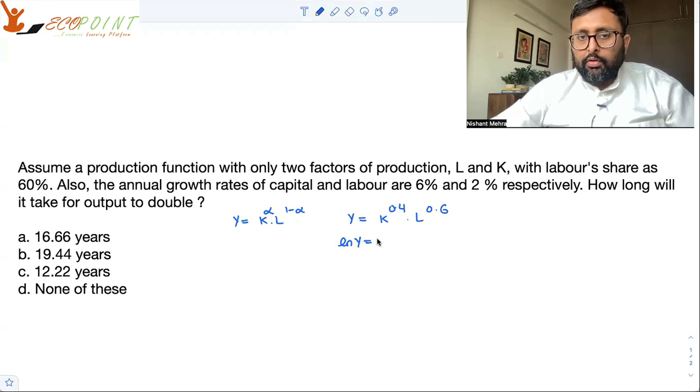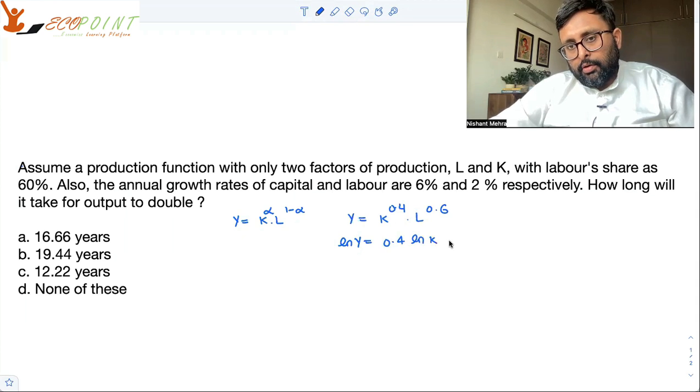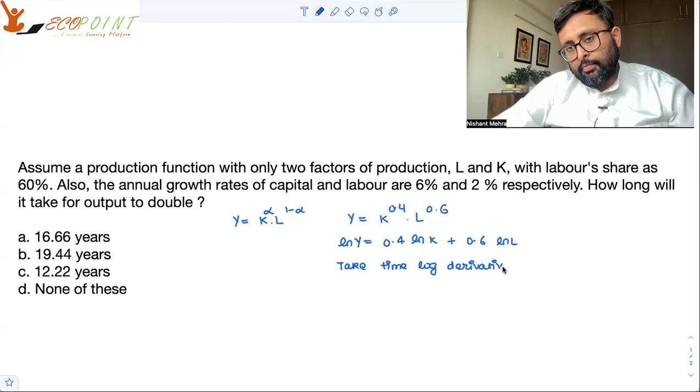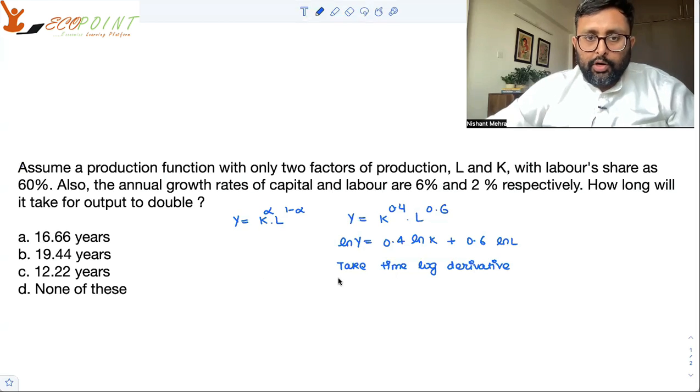First of all, you should know what is the growth rate of output. Then only you can tell how many years it will take the output to double. Log Y = 0.4 log K + 0.6 log L. Please write. Take time log derivatives.